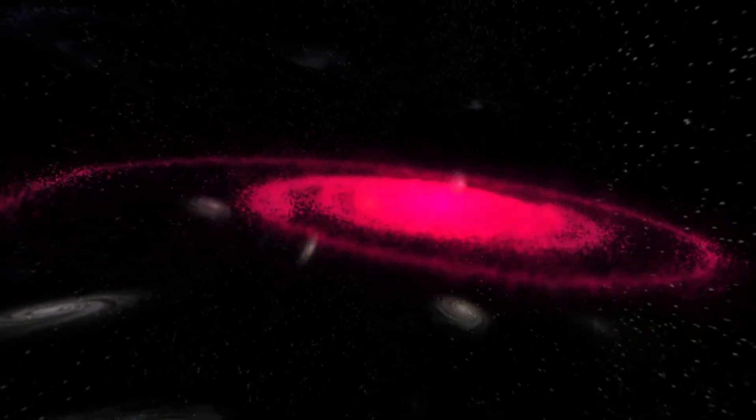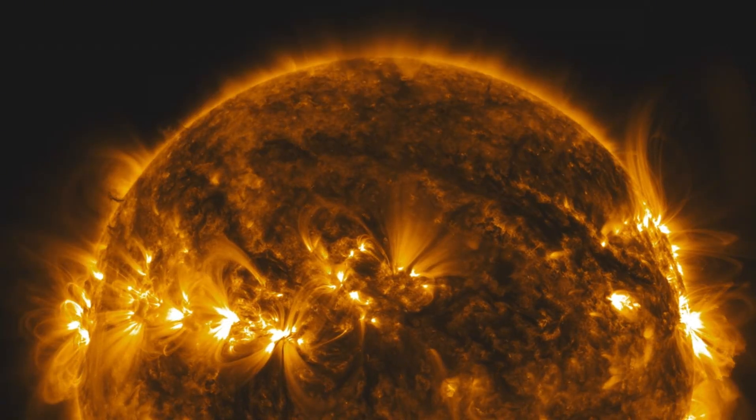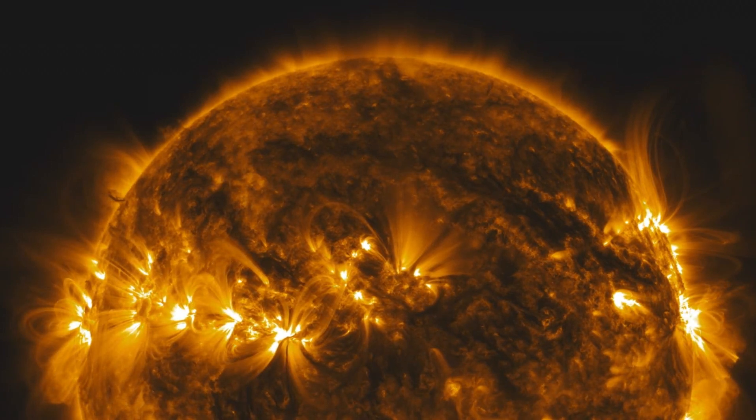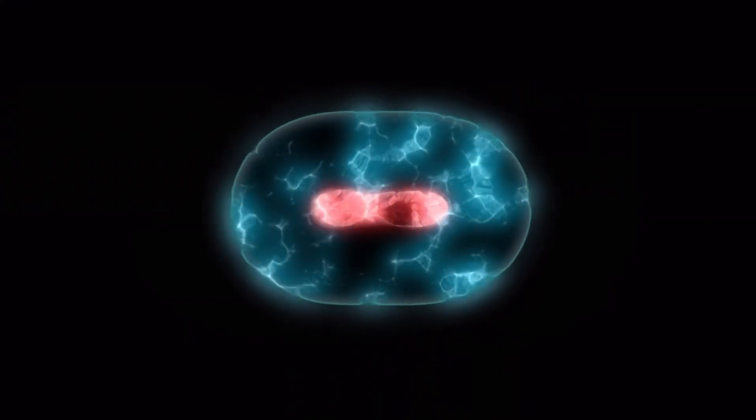The core of Betelgeuse, like all stars, has been undergoing nuclear fusion, converting hydrogen into helium. However, as the star ages, it has exhausted the supply of hydrogen in its core, leading to the fusion of heavier elements such as carbon, oxygen, and eventually iron.